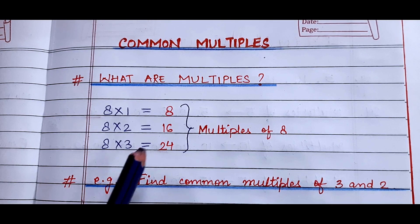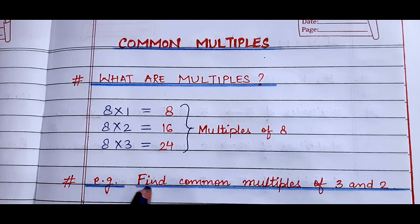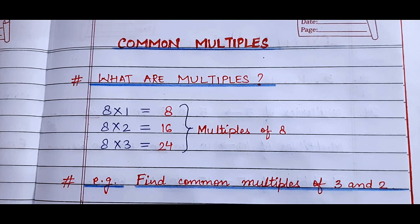Okay. Now for example, find common multiples of 2 and 3. Let's do it.